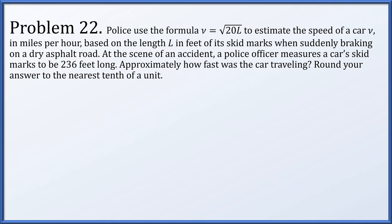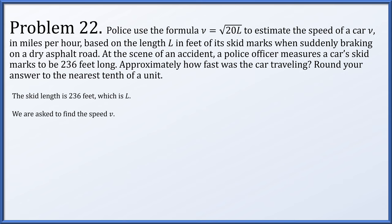Problem 22: police use v = √(20l) to estimate speed v (mph) from skid mark length l (feet). A skid mark is 236 feet long. Plugging in: v = √(20 × 236) = √4720 ≈ 68.7 miles per hour.